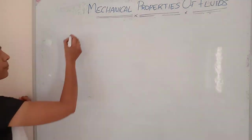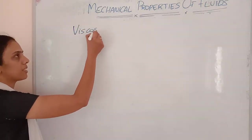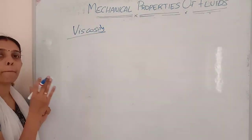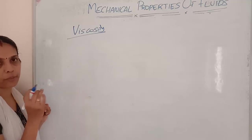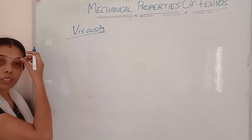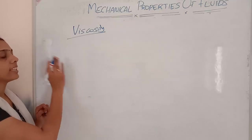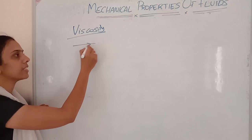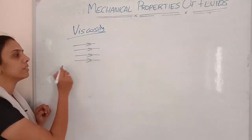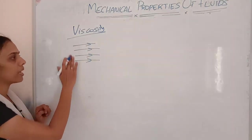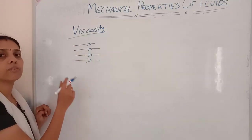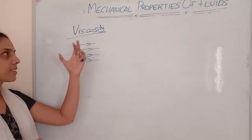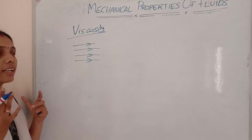So what is meant by viscosity? It is the resistive force between the layers of fluid. Whenever there is a relative motion between the layers of fluid in a streamlined flow, that resistive force is called viscosity.